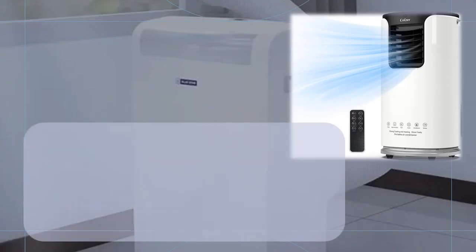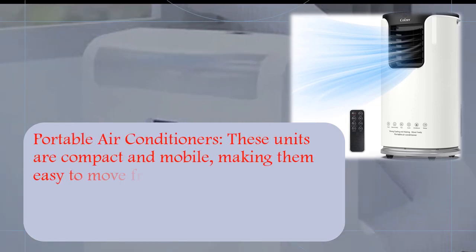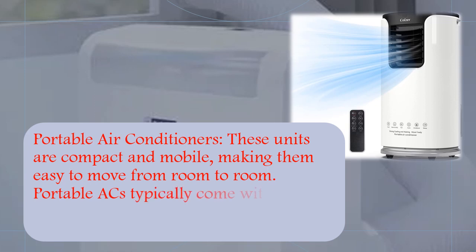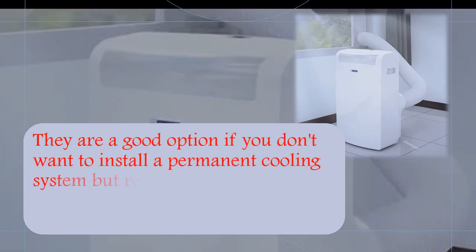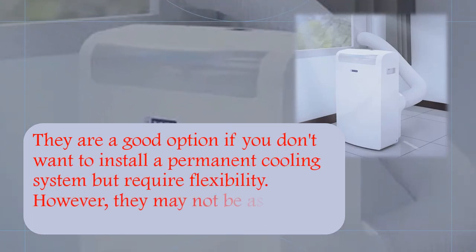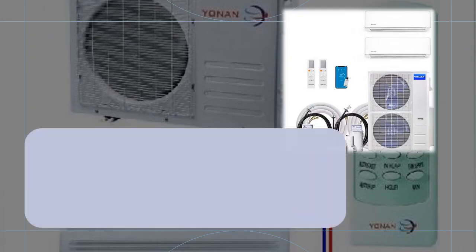Portable air conditioners. These units are compact and mobile, making them easy to move from room to room. Portable ACs typically come with a hose to exhaust hot air outside through a window or vent. They are a good option if you don't want to install a permanent cooling system but require flexibility. However, they may not be as efficient as other types of ACs.